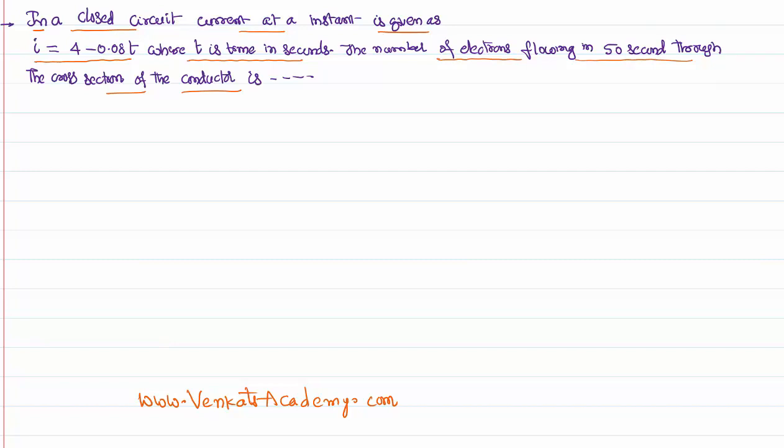That's the problem. So we can solve the problem based on the definition of current. As per the definition of current, we know current is defined as rate of flow of charge: dq by dt. So we can write dq as i dt.